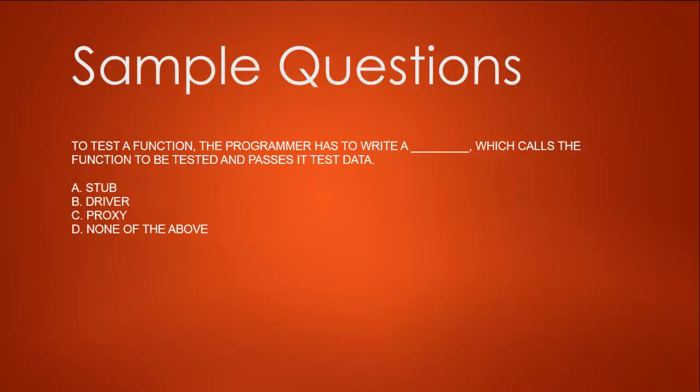Option A — stub: a stub doesn't call the function to be tested and pass test data. We pass data to the stub and it processes that to the next module. So we don't write a stub that calls the function to be tested. Option B — driver: a driver is what we write to call a particular function and process test data, so this looks closer to our answer. Option C — proxy: a proxy is basically a temporary module used for integration testing.